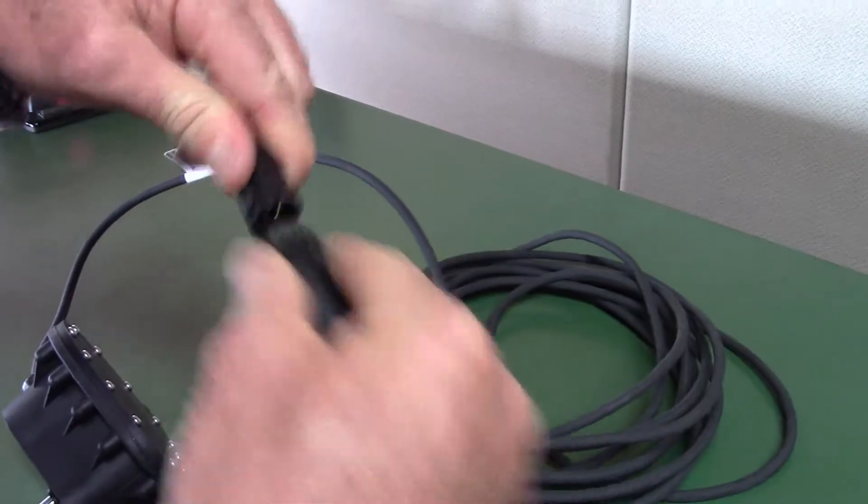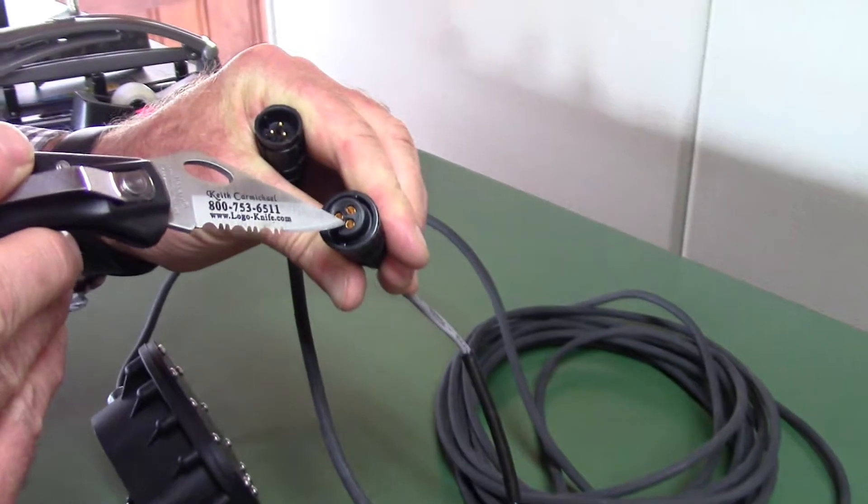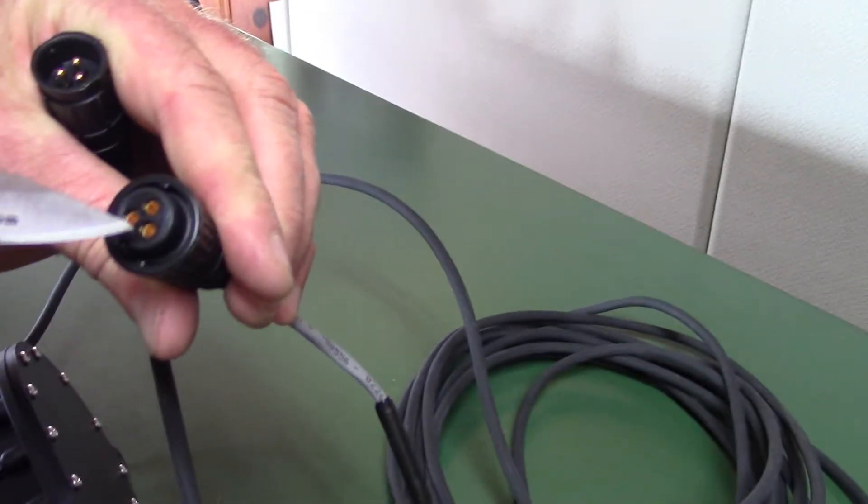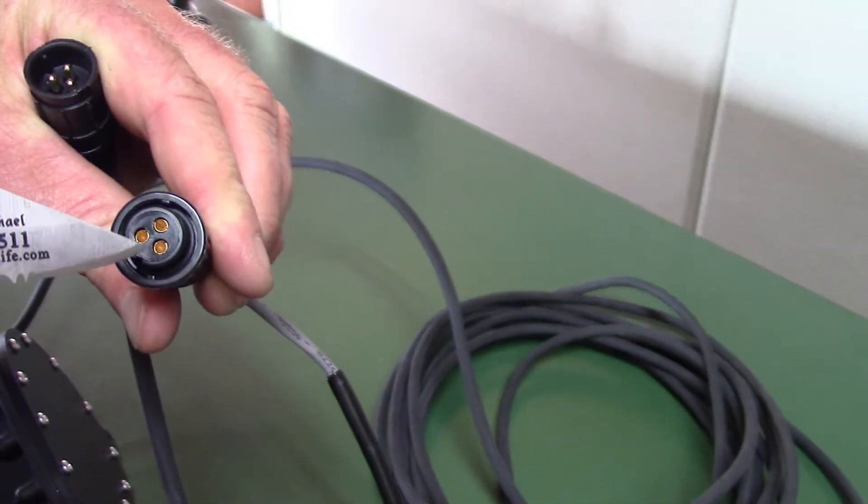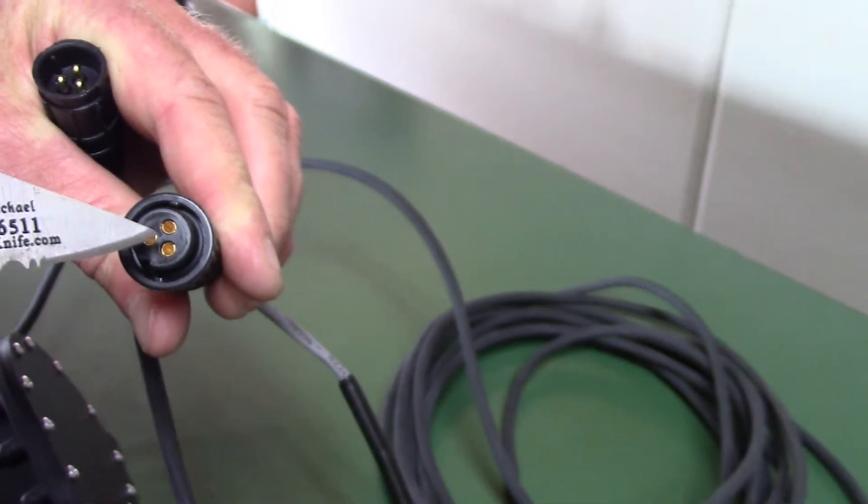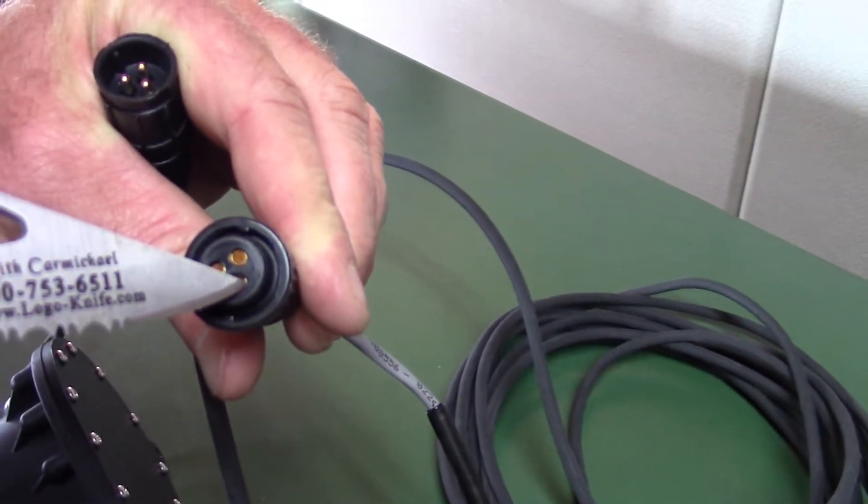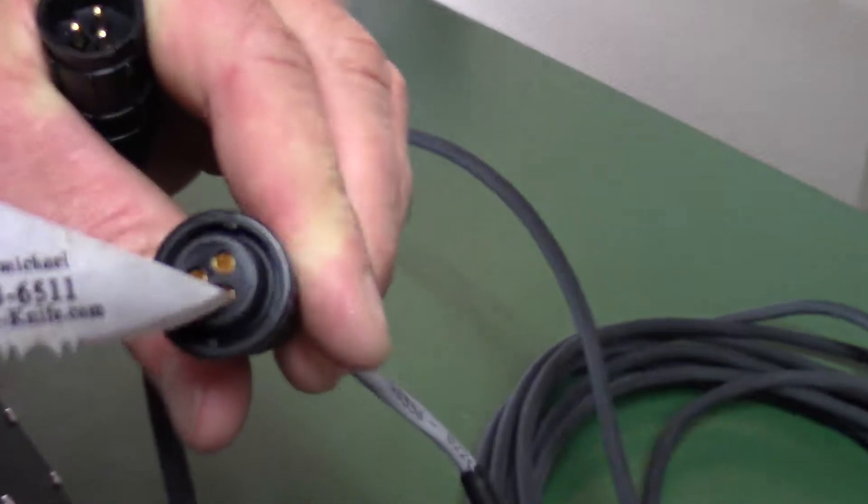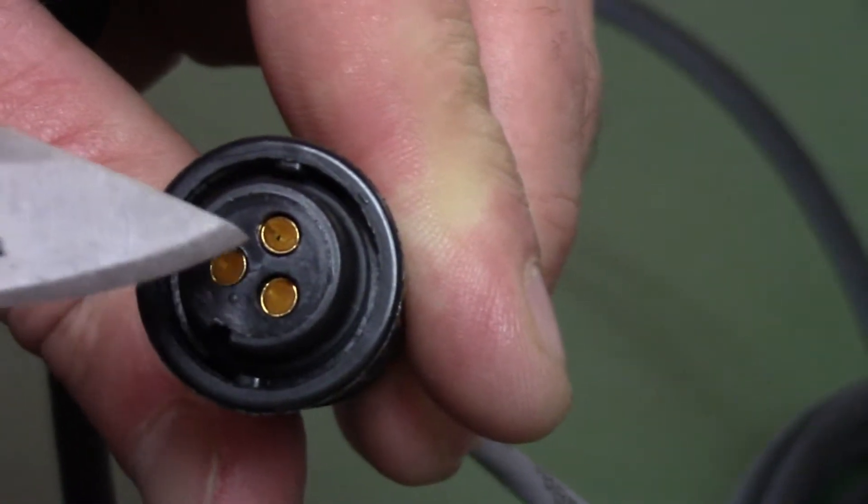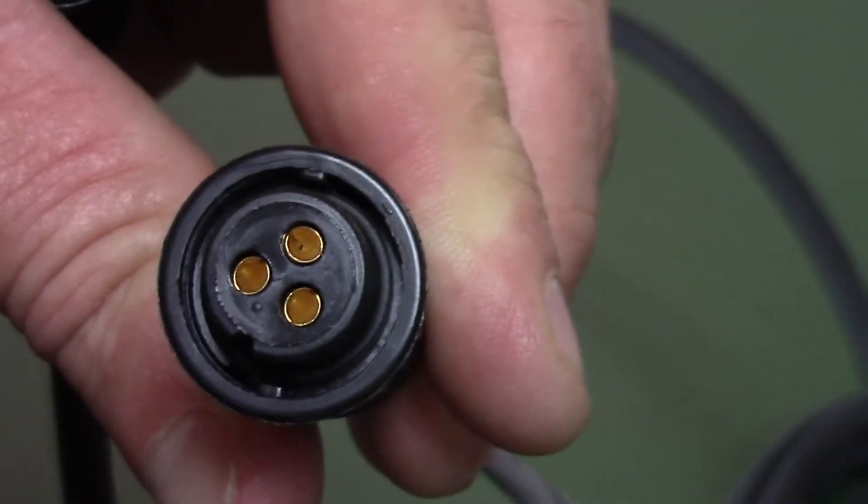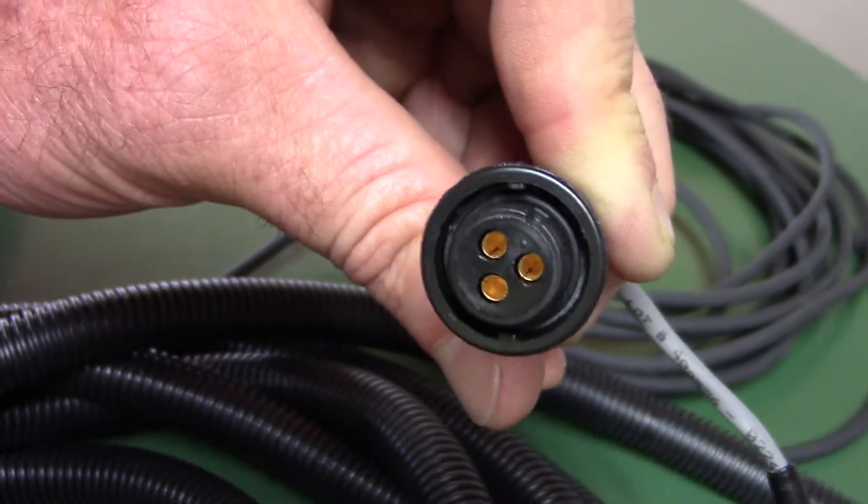Then you start investigating this connection here and sometimes these metal pins in here will get pushed over more to one side. You look straight down in it and you can't see all the round gold, and you'll need to put your pocket knife down in there and pull that metal sleeve over a little bit where you see all the round gold.